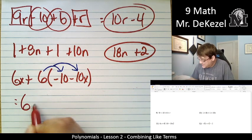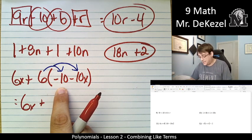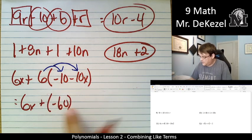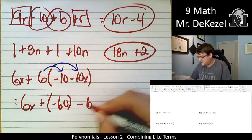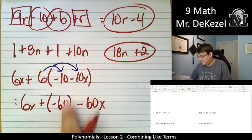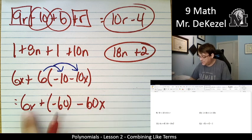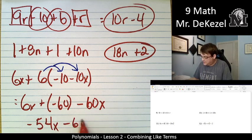So we can have 6x just stays. 6 times minus 10, that's minus 60. And then 6 times minus 10x is minus 60x. I'm going to leave this minus 60 by itself because it is the only 0th degree term. I can combine these though. I would get minus 54x minus 60.